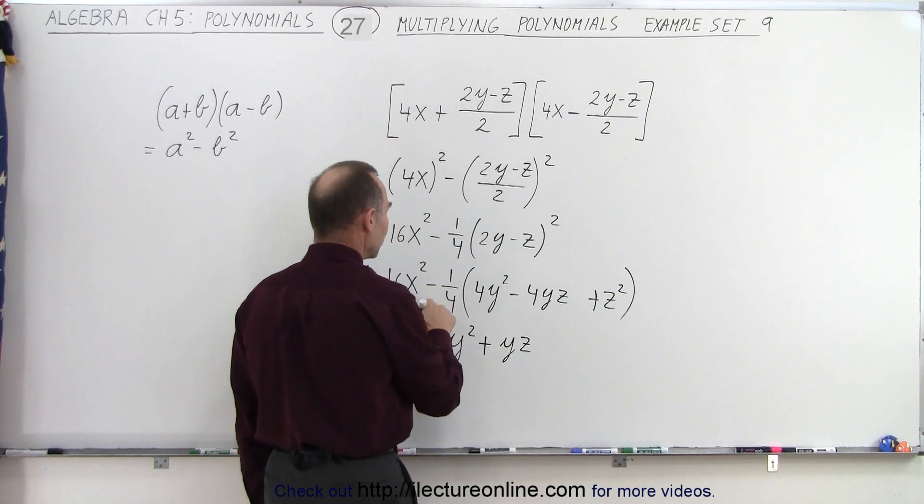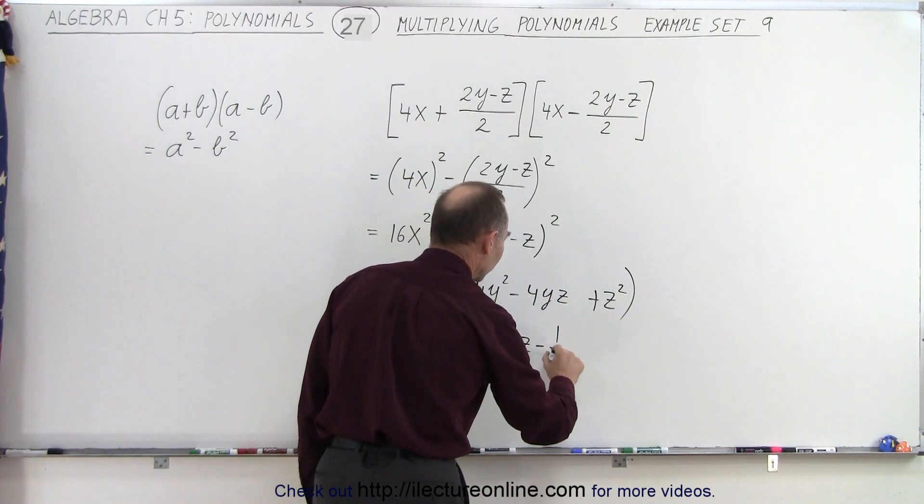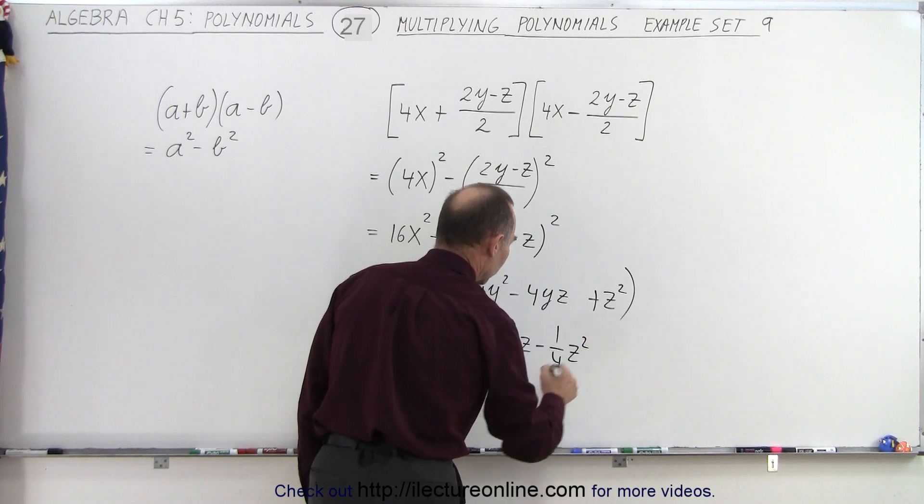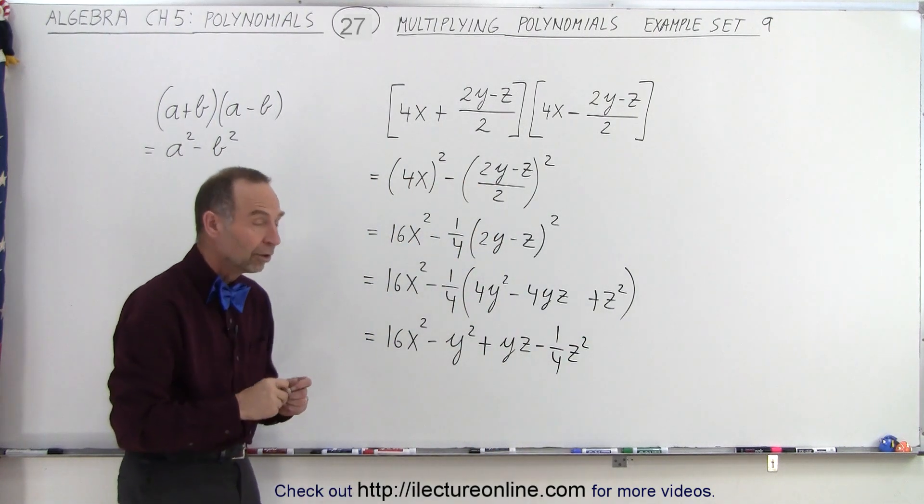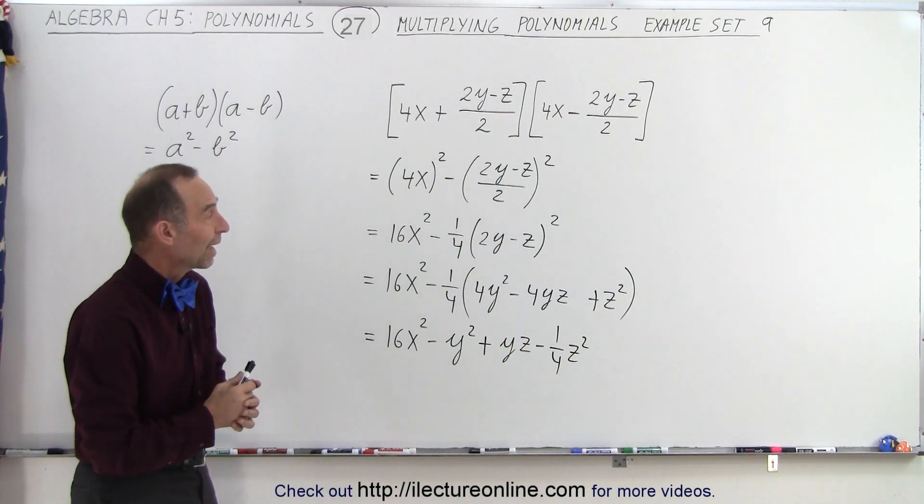yz. And finally, minus 1 fourth times that gives us a minus 1 fourth times z squared. And so that would then be the result of the product that we have there.